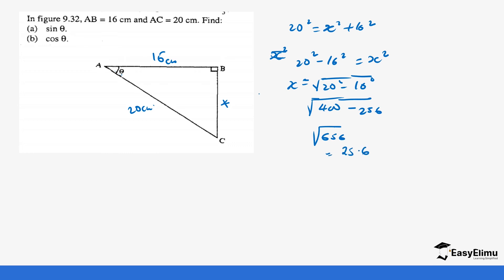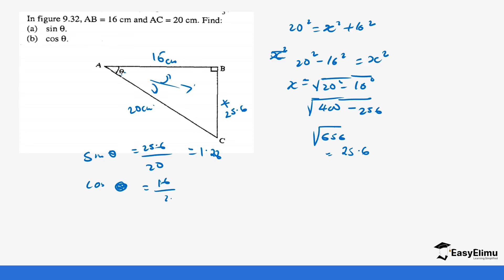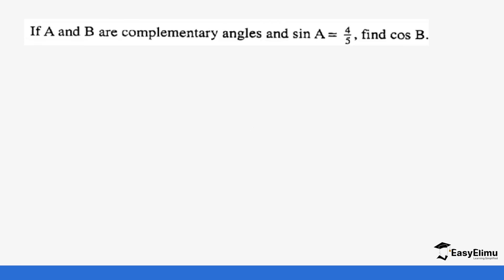So x equals 12. Sine of this angle equals the opposite over hypotenuse, which is 12 over 20, giving us 0.6. Cosine of the same angle equals the adjacent over hypotenuse, which is 16 over 20, giving us 0.8.